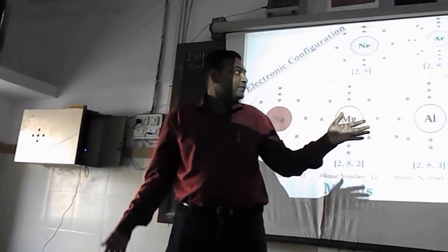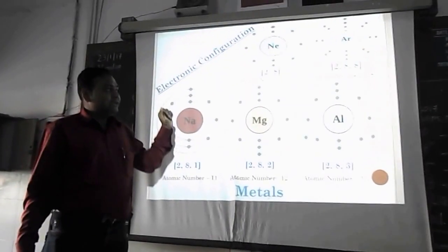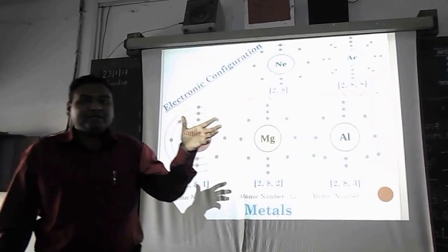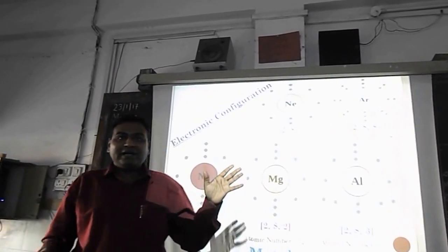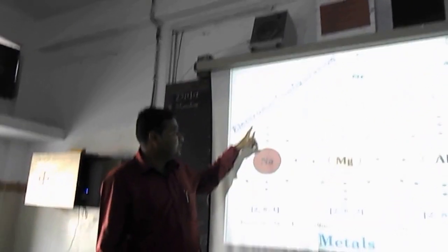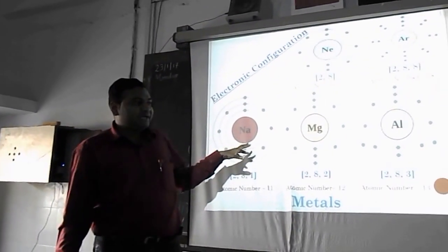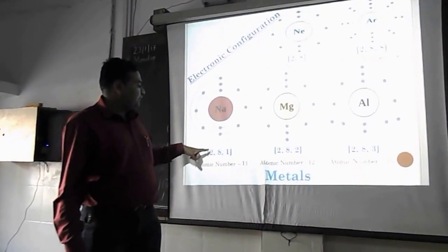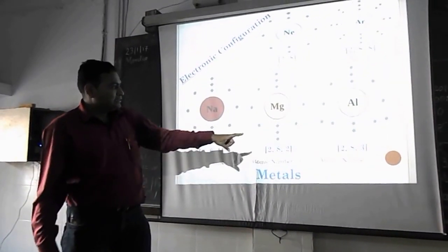Let's try to understand it. First of all we will try to understand about metals, non-metals and semi-metals. For that we will first go with the atomic configuration. The electronic configuration of different elements is given here. We have taken different elements from atomic number 11, 12 and 13.